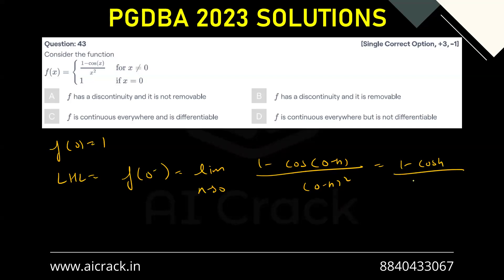This is 1/2 standard limit. Now if we talk about RHL, that would be f(0⁺) equals limit h approaches zero, (1 - cos h)/h². This is also 1/2. We can see that the limit is existing because LHL and RHL are both equal.